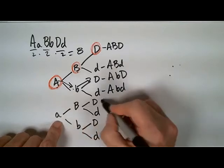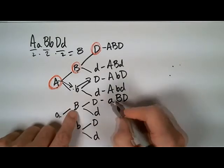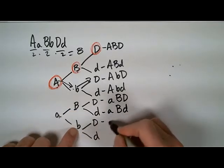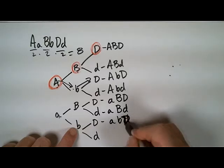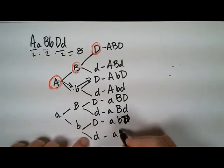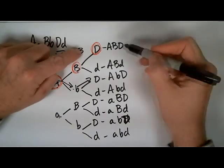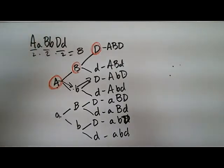And continuing through the fork: little a, big B, big D; little a, big B, little d; little a, little b, big D; little a, little b, little d. We calculated there should be eight — one, two, three, four, five, six, seven, eight. We do have our eight gametes. So I'm pretty confident we've got the right number of gametes to run through these crosses.